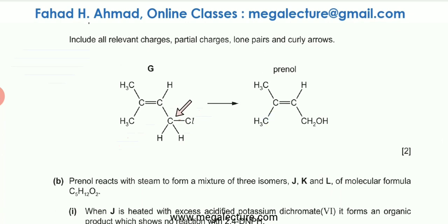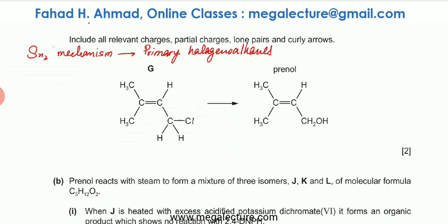This is a primary halogeno alkane. Cl is bonded to a carbon atom that is bonded to two hydrogens and one carbon chain. Primary halogeno alkanes undergo an SN2 mechanism — this bond is polar, carbon has a partial positive charge, Cl has a partial negative charge. The OH⁻ is the nucleophile; NaOH produces that nucleophile, which directly attacks the positive carbon atom from the opposite side.